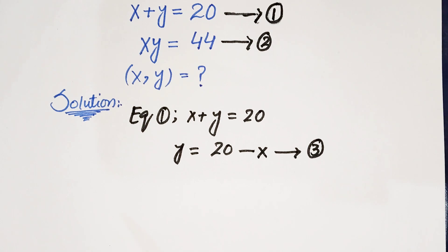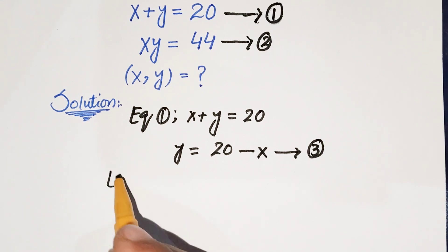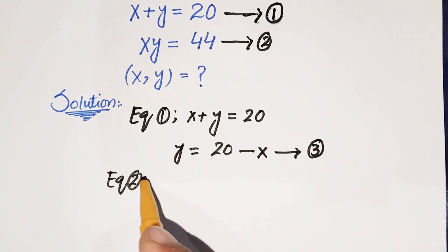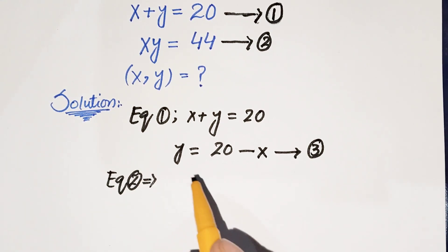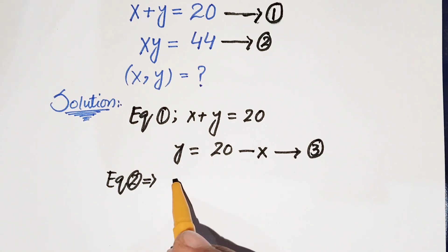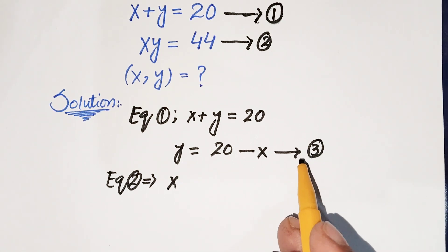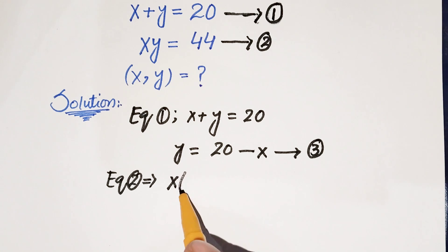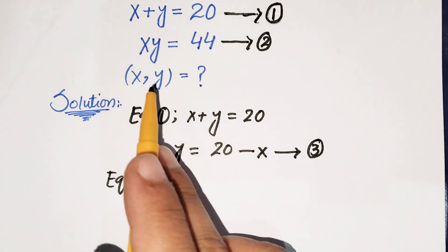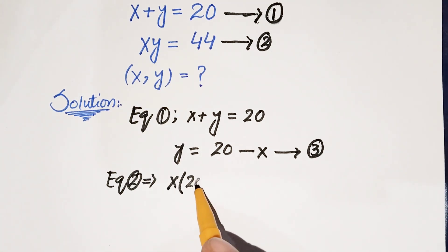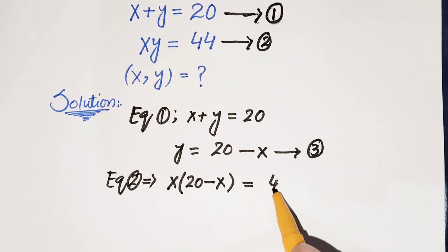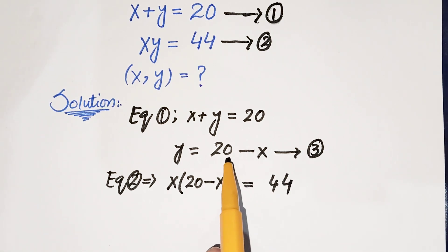Now using equation 2, which says x times y equals 44, we are going to substitute the value from equation 3 — replacing y with 20 minus x — so x times (20 minus x) is equal to 44.